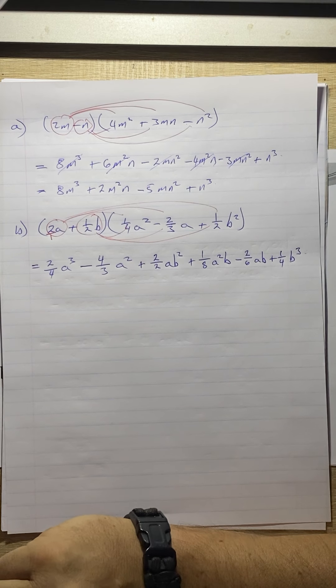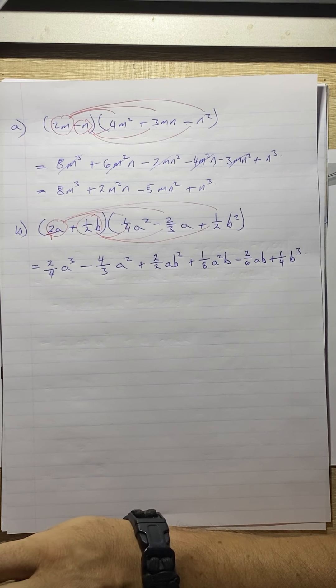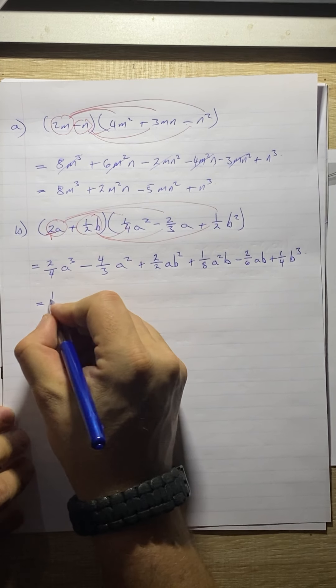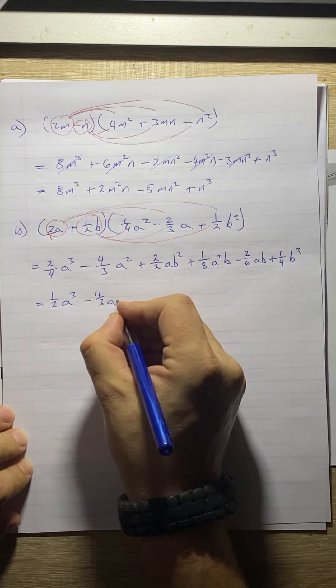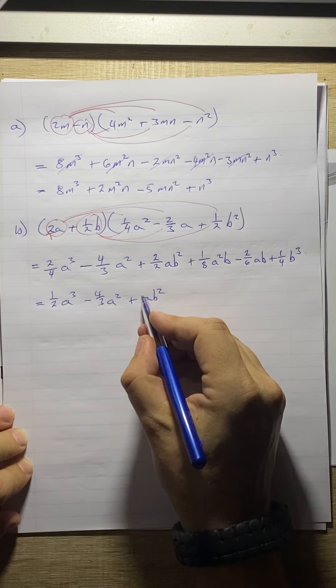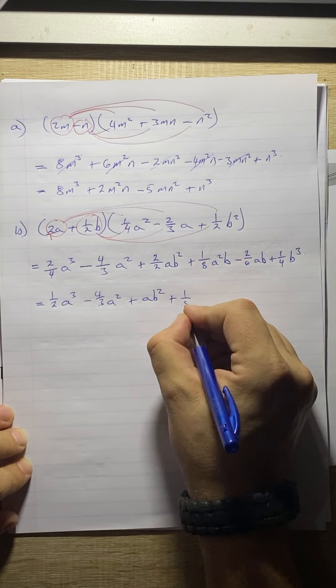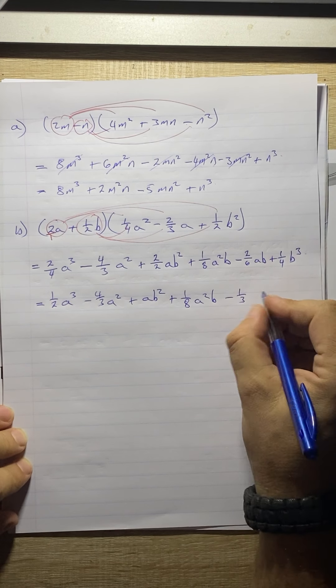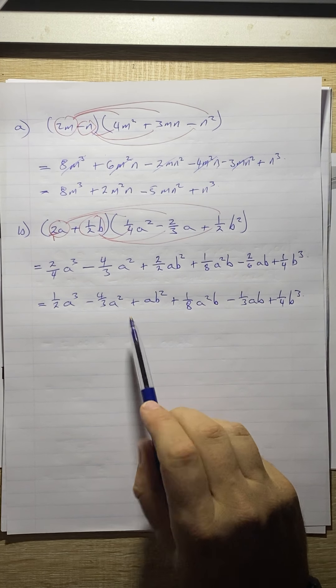What I can do now, grade 10s, is I can now simplify my fractions. So 2 over 4 is the same as a half a cubed. 4 over 3 is just 4 over 3, we can't simplify that. 2 over 2 is 1. Yes, there is a 1 there, I just don't have to put it in. Then 1 over 8 is 1 over 8, can't simplify that. 2 over 6 is going to be 1 over 3, and then 1 over 4 is just 1 over 4.